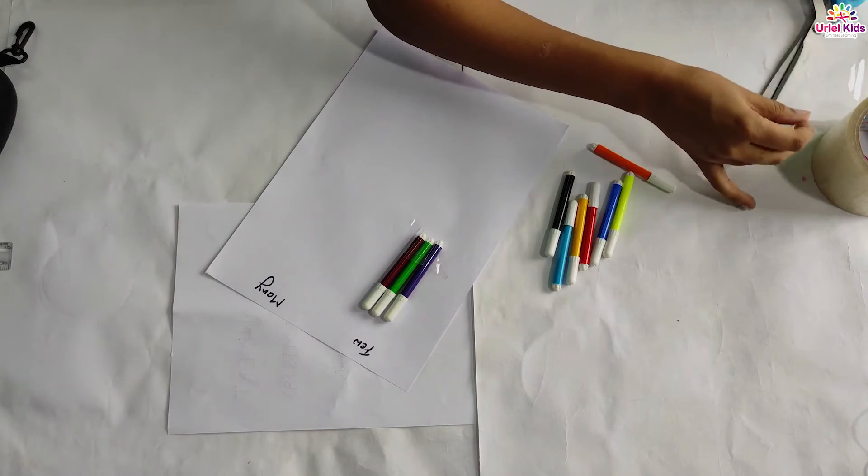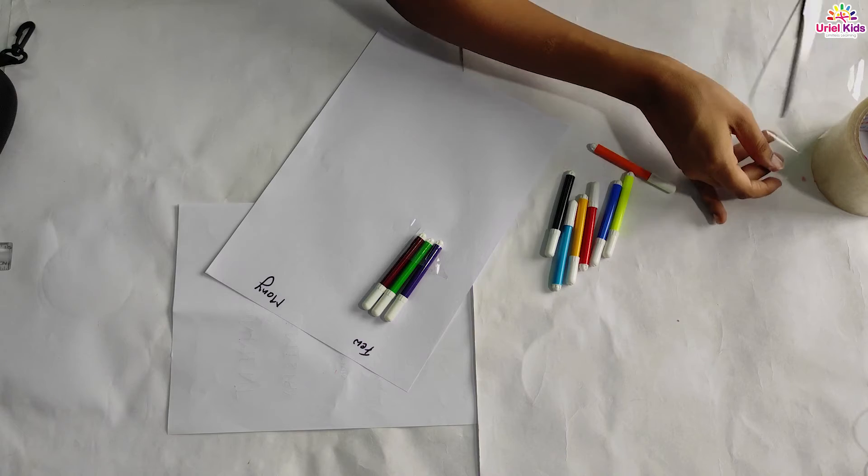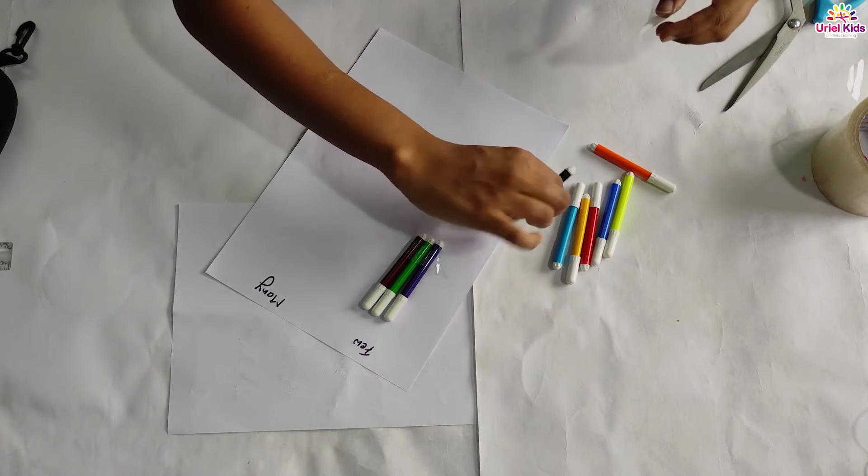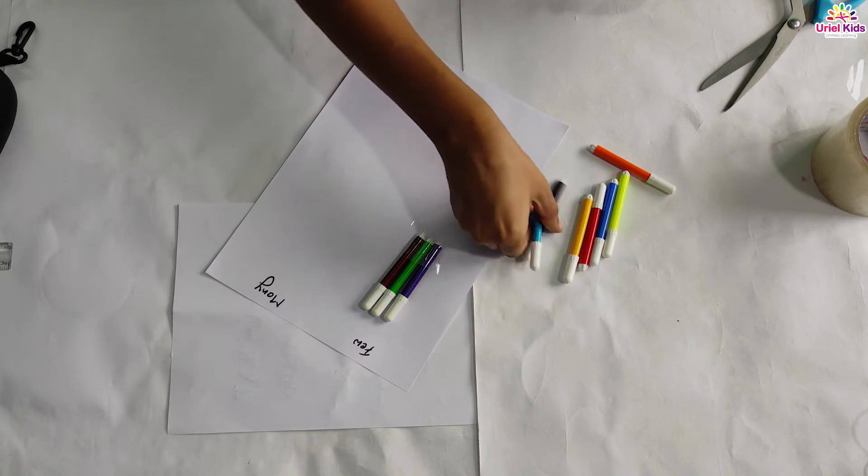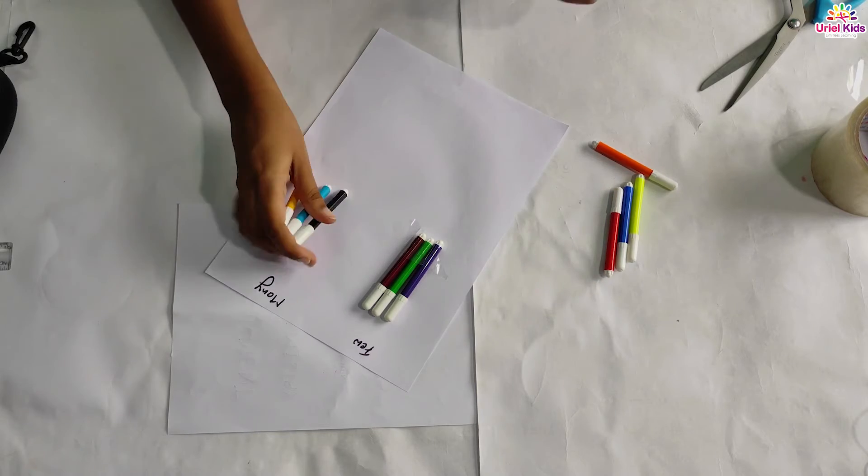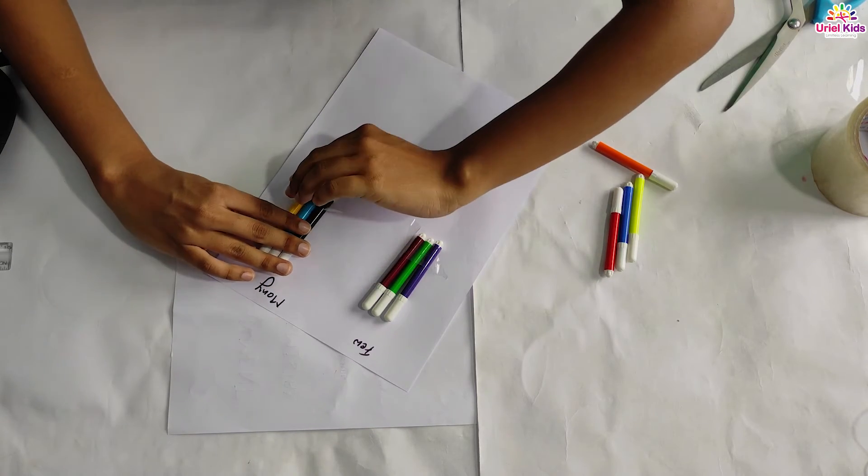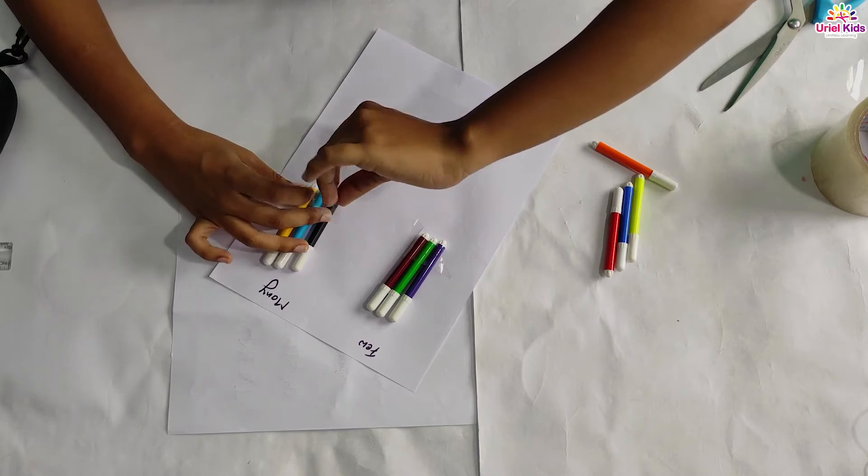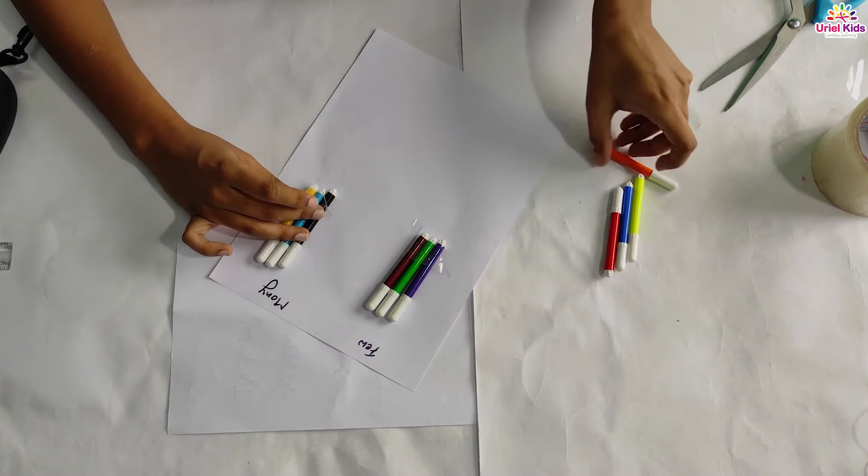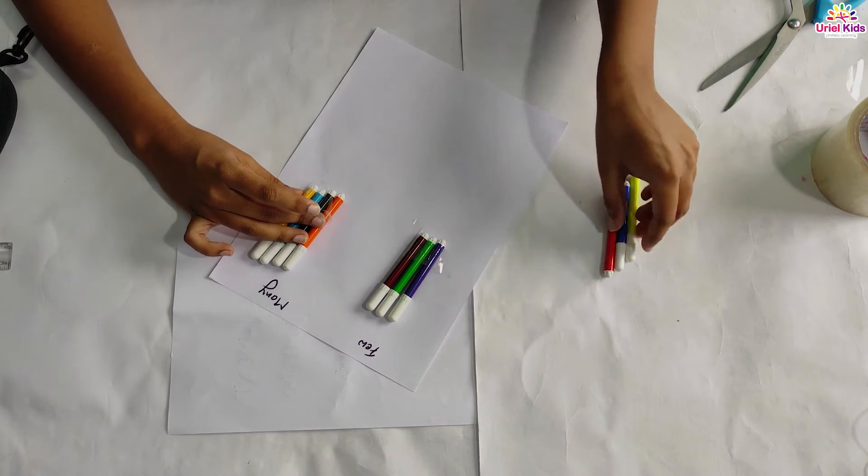So when we will be doing it on a paper, just by seeing, the child will understand that yes, this is the few column and this is the many column. Now children, see here, in the many column I'm going to stick here. I have put few, I have put only three sketch pens, but here I'm going to put the remaining everything, everything, okay?